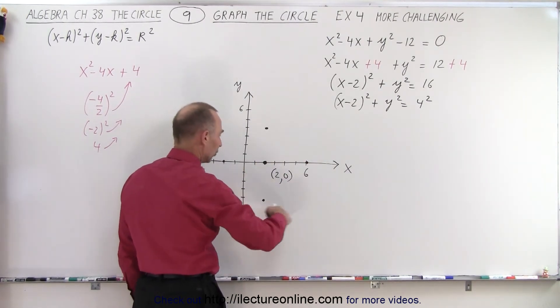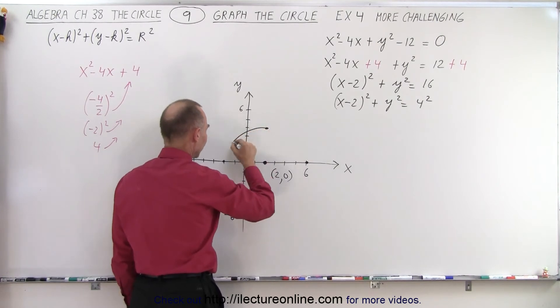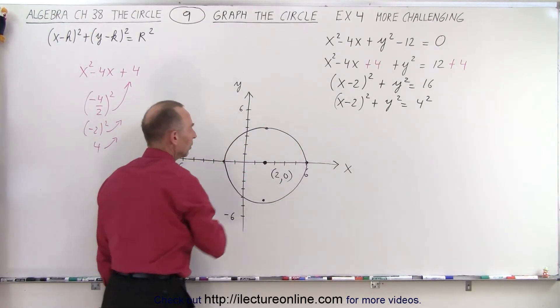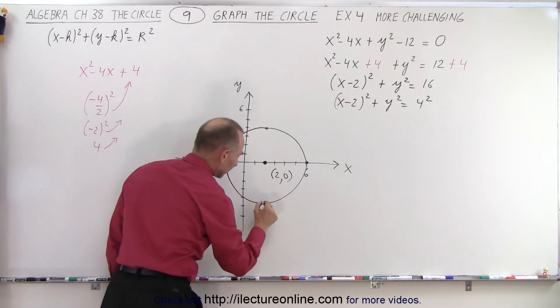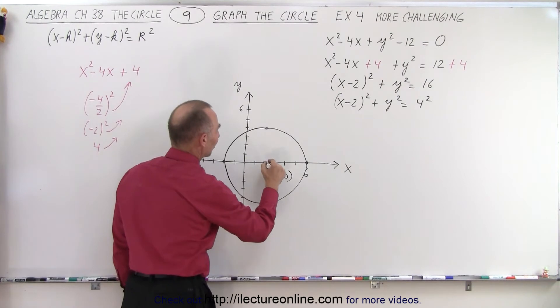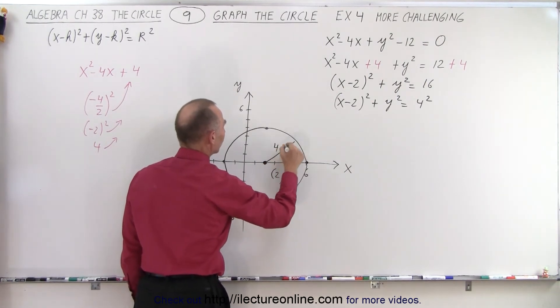There we go. And then if we connect all those four points, we have ourselves a circle. Where the center, we'll put the dot there so it's on the circle. So with the center at 2, 0, and with a radius equal to 4.